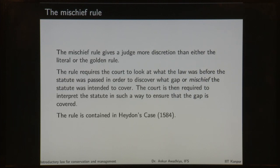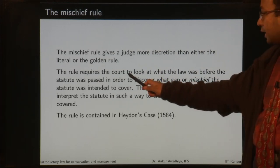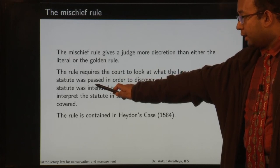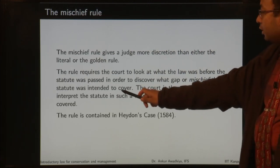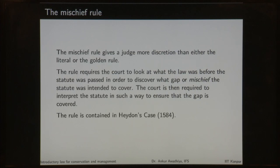The mischief rule gives a judge more discretion than either the literal or the golden rule. The rule requires the court to look at what the law was before the statute was passed, in order to discover what gap or mischief the statute was intended to cover, and then to interpret the statute so as to ensure that gap is covered. This rule was first enunciated in Heydon's Case (1584).